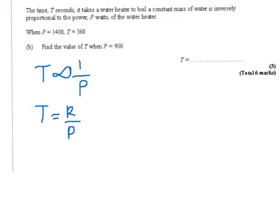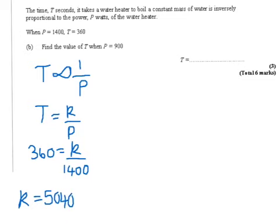Now we need to find our value for k. We know that when p is 1,400, t is 360. So we substitute those values in: 360 equals k, our constant, divided by 1,400. If we multiply both sides by 1,400, k equals 504,000.